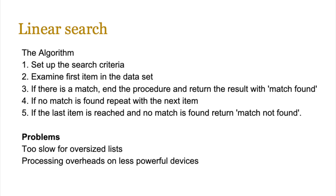Let's start with the algorithm for linear search. Basically, you set up a search criteria and examine the first item in the data set. If there's a match, you end the procedure there and return the result that the match has been found. If no match is found, you continue to the next item in the data set until you reach either the last item or you find a match. If you reach the last item without finding any match, you return 'match not found.' The problem with this algorithm is that it's too slow when lists become oversized. If you've got a list with millions or billions of data items, it can become very slow, and the processing overhead on less powerful devices becomes huge.